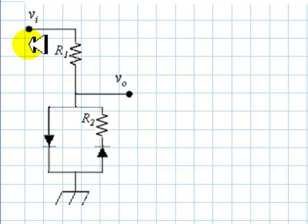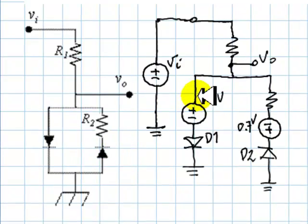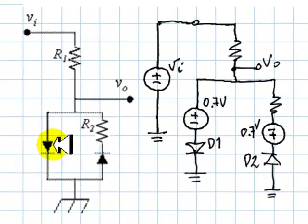The first thing I do in an exercise like this one is represent the electronic components by electric circuit models. Like here I have replaced each one of the real diodes by the simplest model we have seen in class, the one prescribed in this exercise.